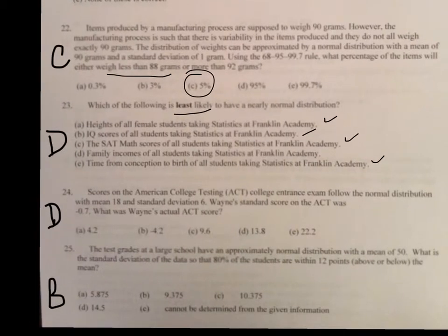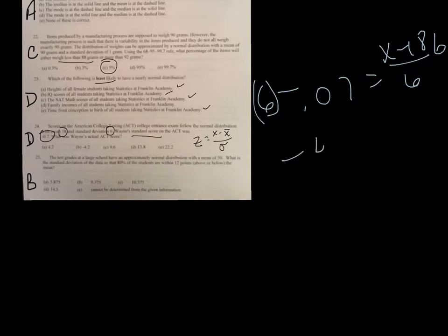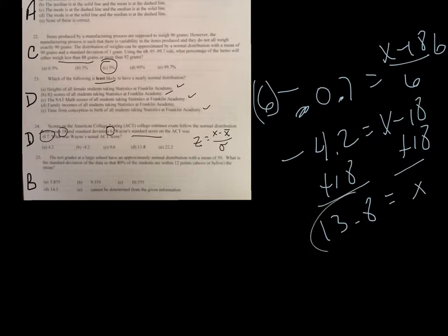On number 24, basically, what was Wayne's actual score? Remember, you have to do Z equals X minus X bar over the standard deviation. I've given you the Z score because it says the standard score is 0.7. And then you have an average of 18 and a standard deviation of 6. So, basically, remember what you do is you take your point, negative 0.7 equals X minus 18 over the standard deviation of 6. Well, you're just solving for X. So, when you multiply 6 on both sides, you get negative 4.2 equals X minus 18. Well, when you add 18 to both sides, you end up getting 13.8 equals X. And that's why D is your score.